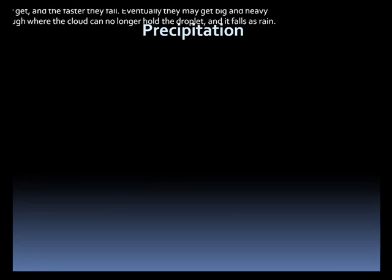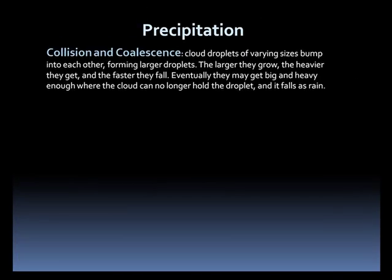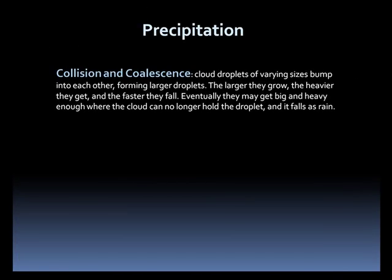There are a couple of ways that precipitation develops. One is collision and coalescence. Essentially, in this process, cloud droplets bump into each other, becoming bigger and heavier, eventually becoming too heavy to stay aloft, so they fall to the ground as precipitation.